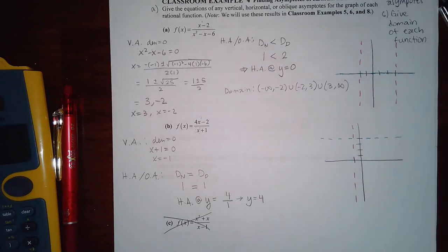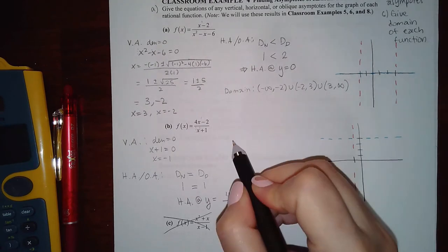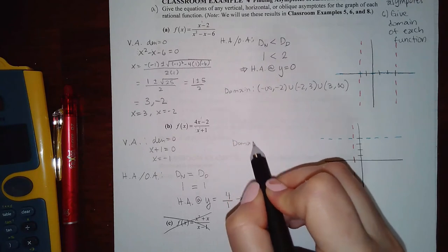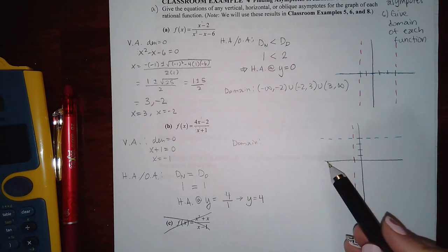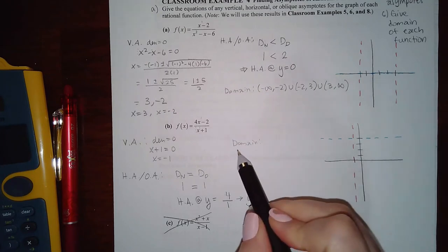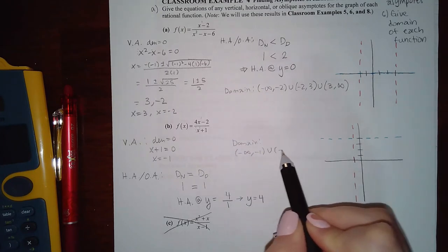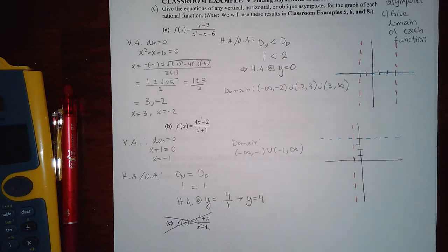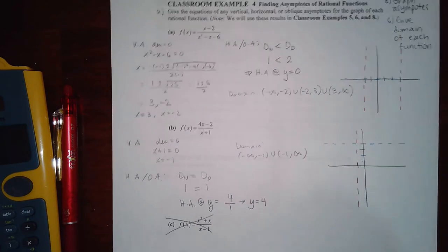The domain based on the one vertical asymptote at x = −1 is: negative infinity to −1 and negative one to positive infinity. The third example would have an oblique asymptote, but we won't be covering oblique asymptotes in this class.